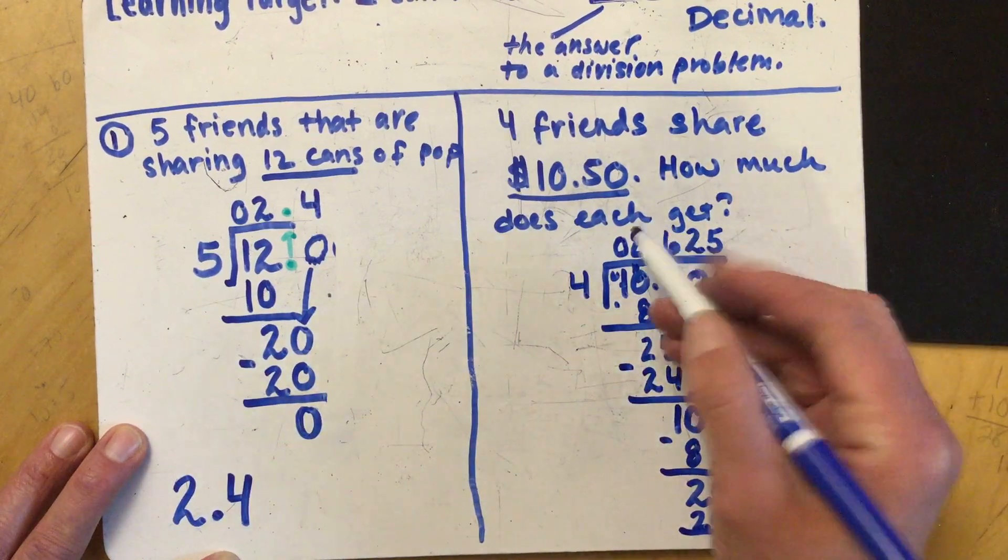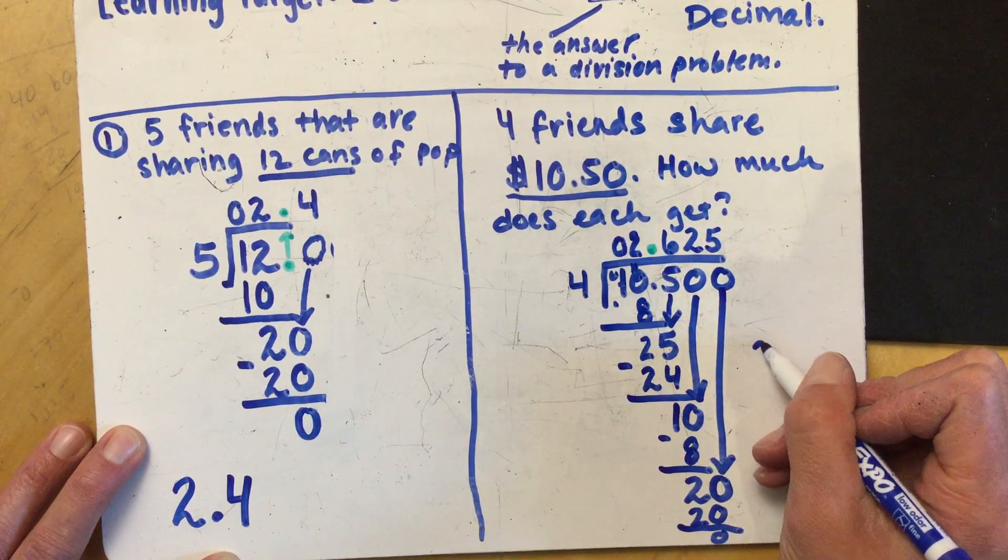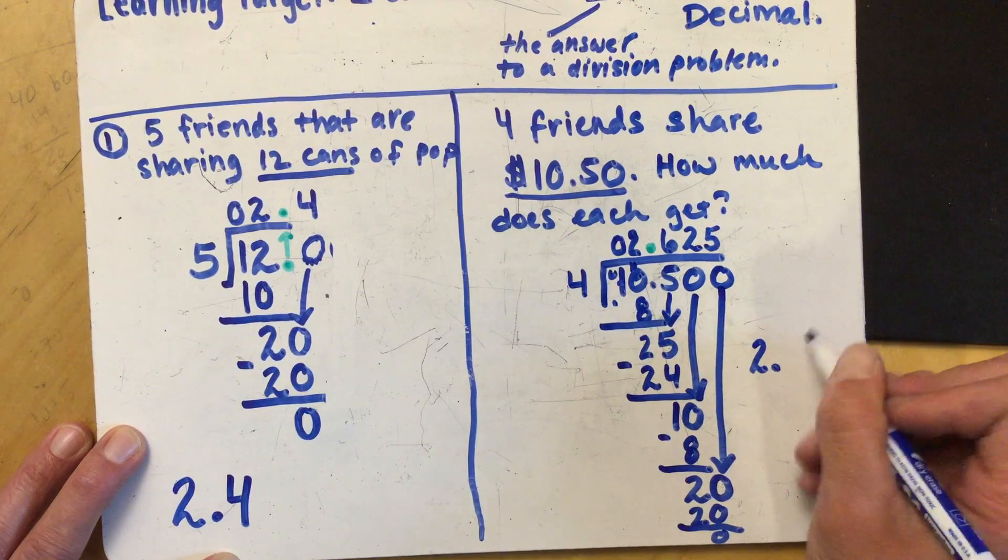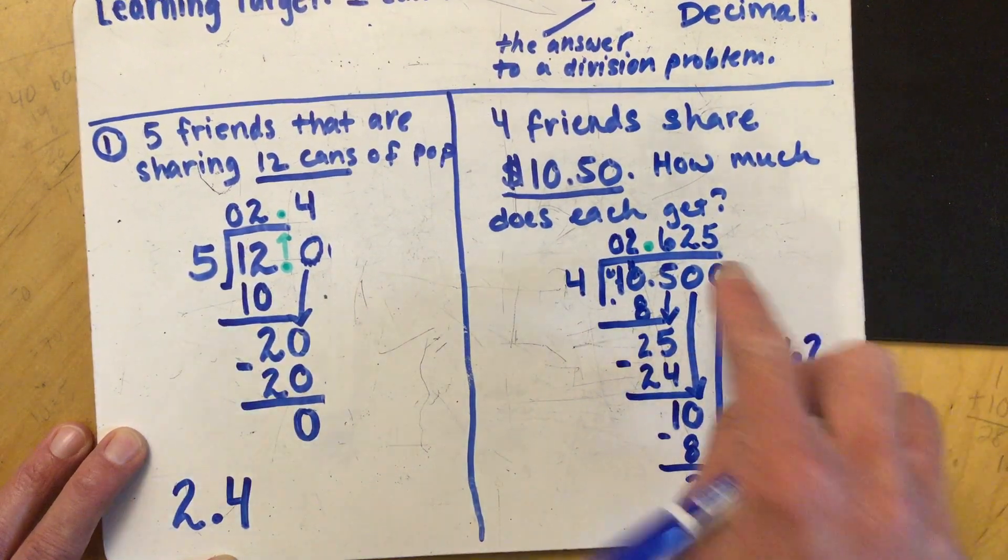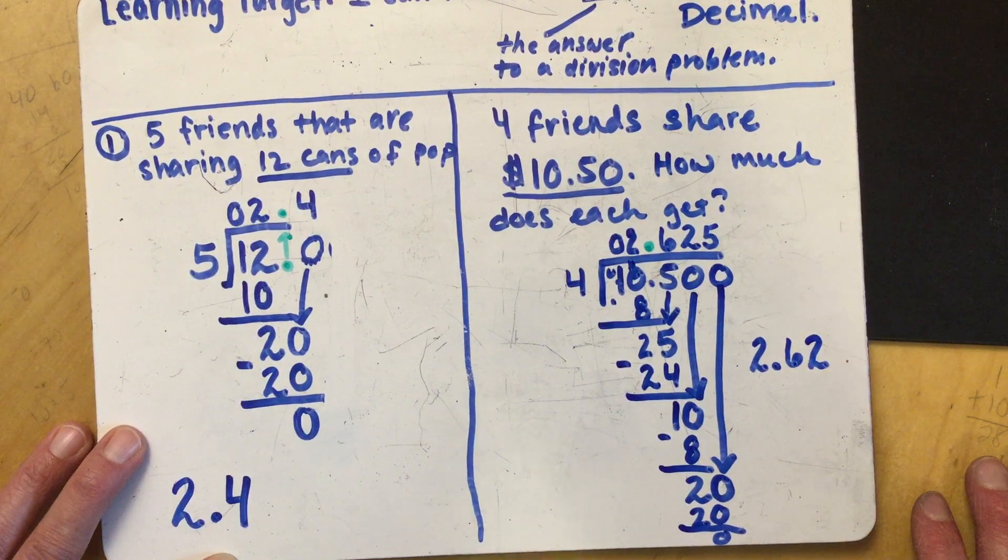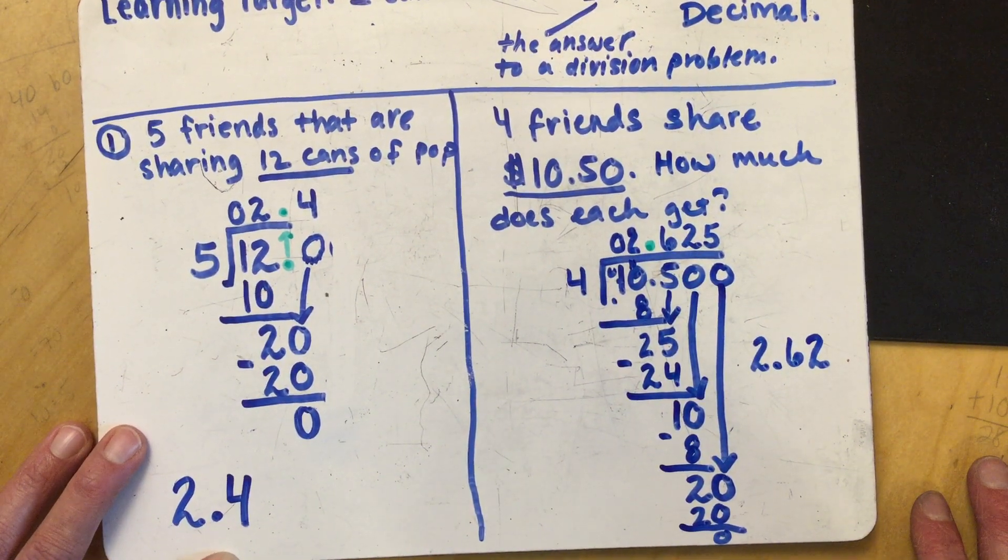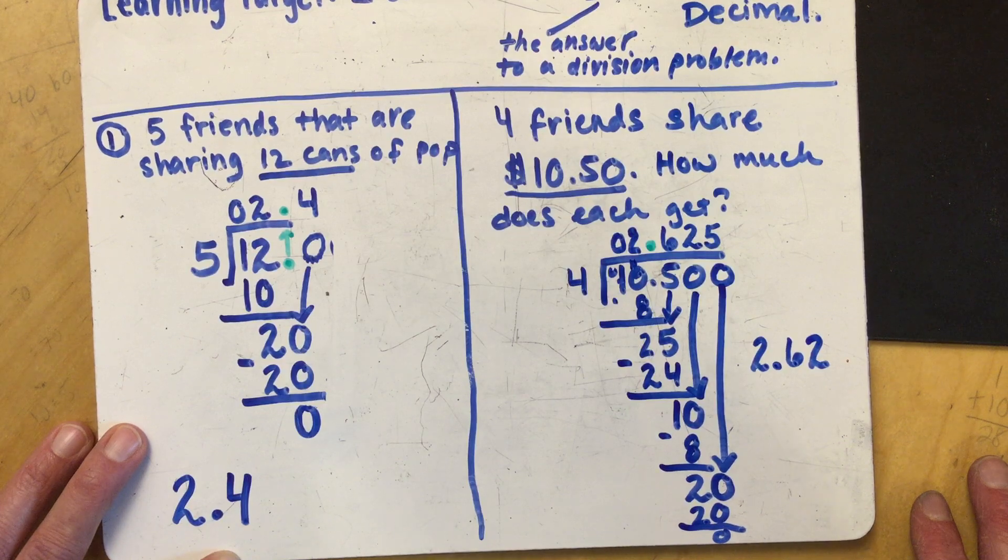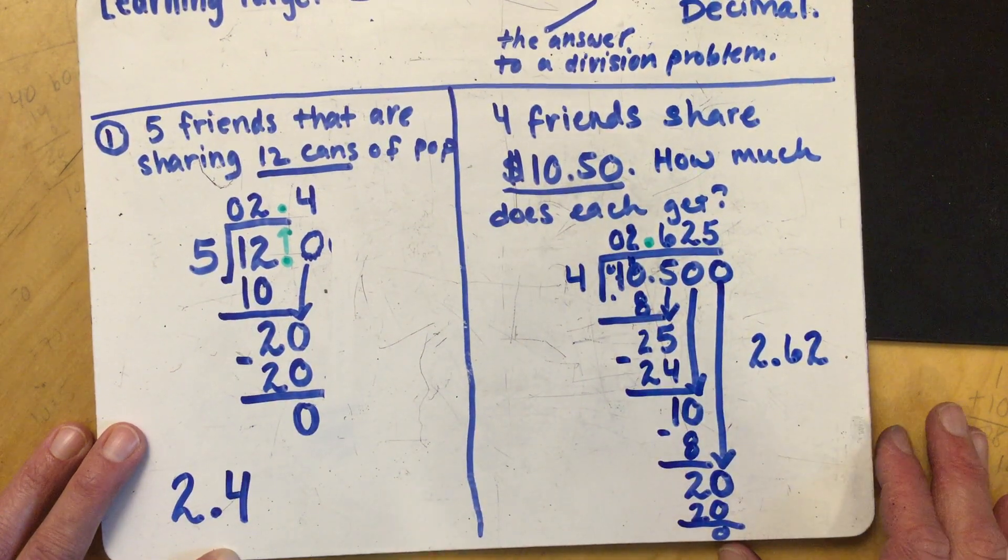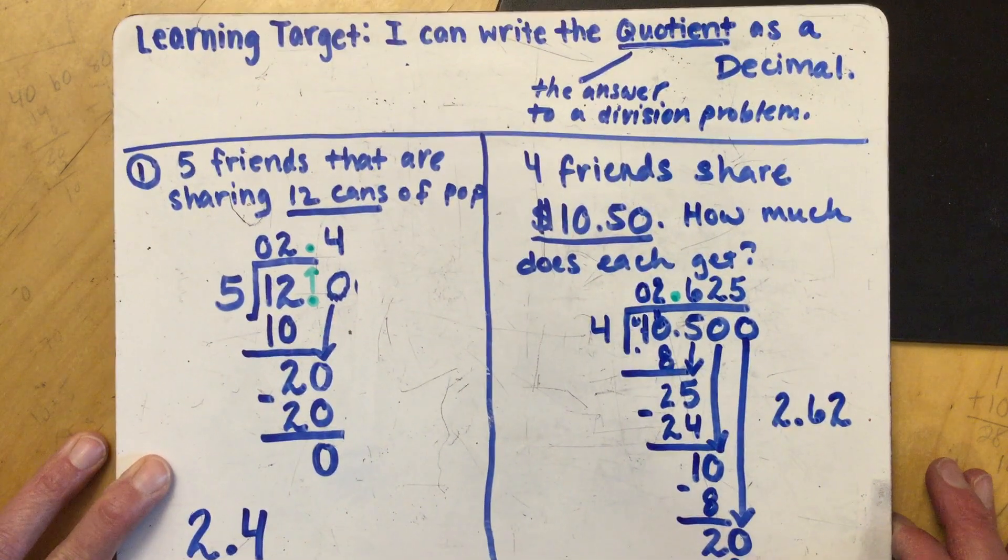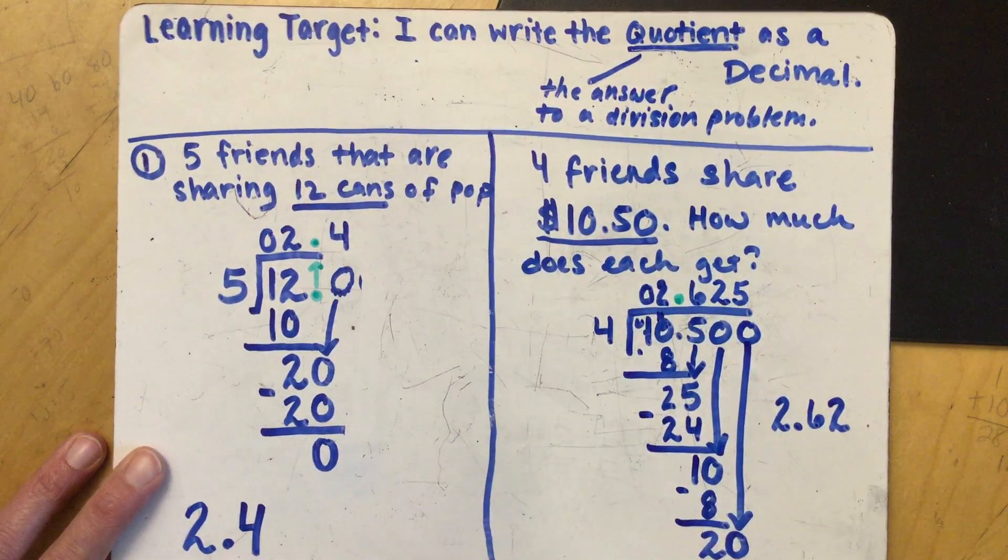So each person will get the quotient is two dollars roughly sixty two cents because no one really ever gives you six hundred and twenty five thousandths of a dollar. So that would be the quotient or the answer to that division problem written as a decimal. Our learning target for today.